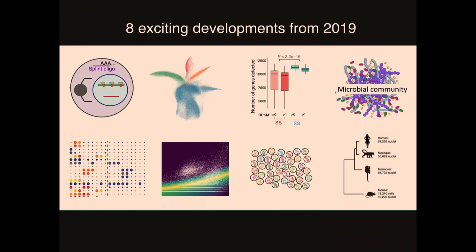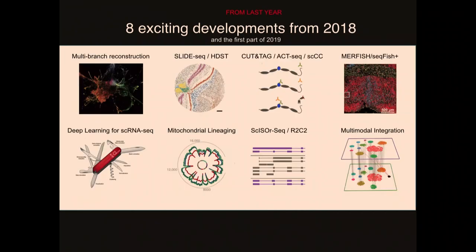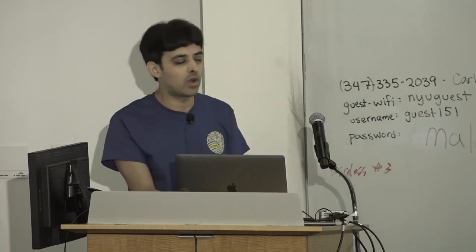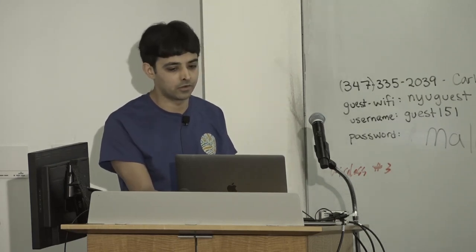Just to convince you this list will be useful, it's always fun to go back and look at what we recommended last year. We talked about computational strategies like Monocle 3 and Liger, and technologies like Cut and Tag and SlideSeq. Almost all of those were BioArchive preprints when we highlighted them — now every single one of those papers is out, some widely used and even standard practice. That's exactly why we have this workshop: to flag these things early.